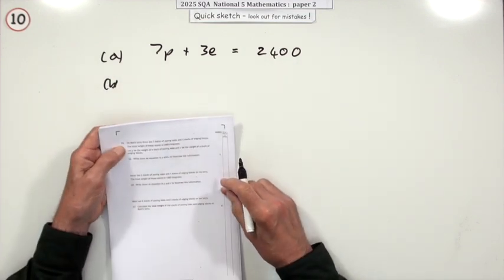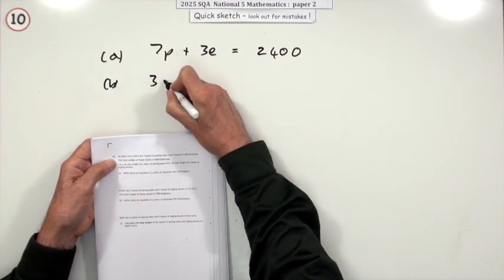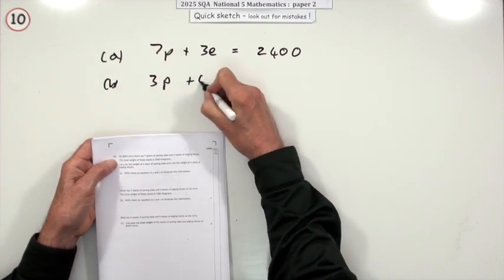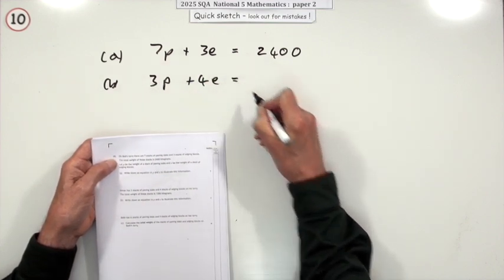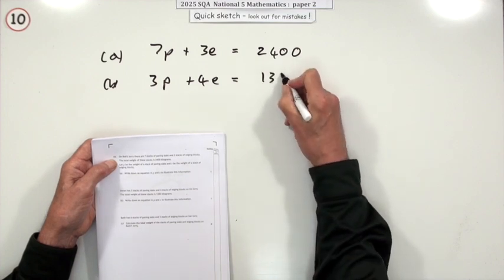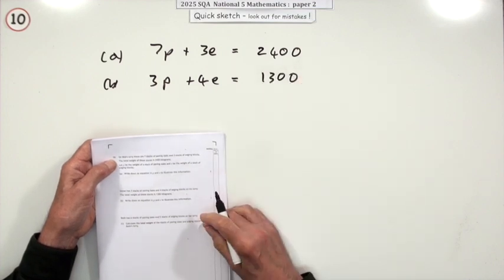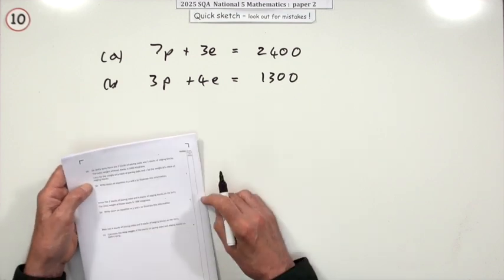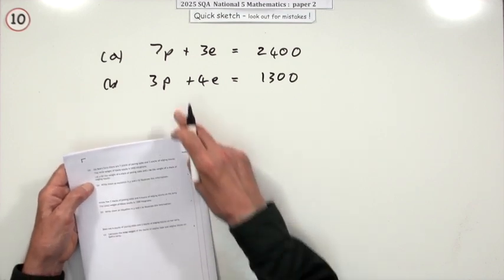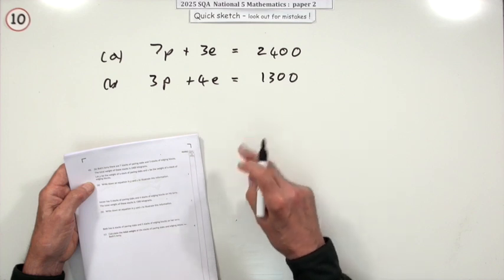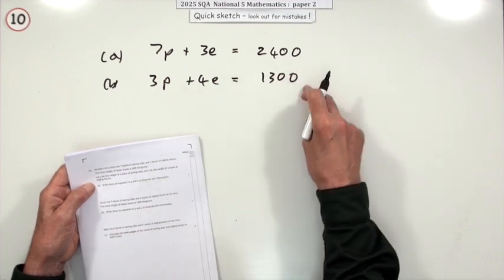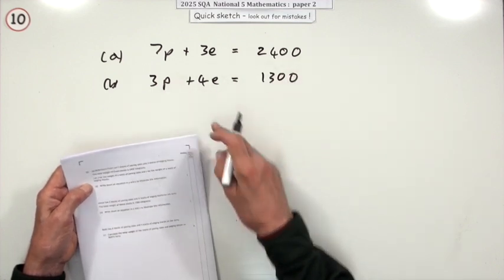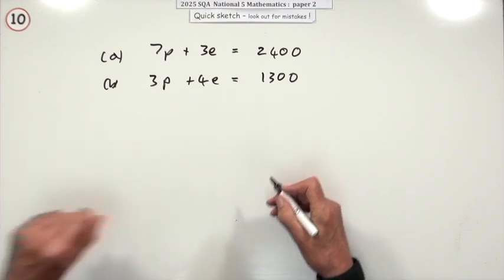Part B. The other load is three stacks of paving slabs and four stacks of edging blocks and that comes to 1,300. Write down an equation to illustrate that. Beth has six stacks of paving and five stacks, but what do they come to? Well, you'll need to work out from these two what the weight of those are individually using simultaneous equations.